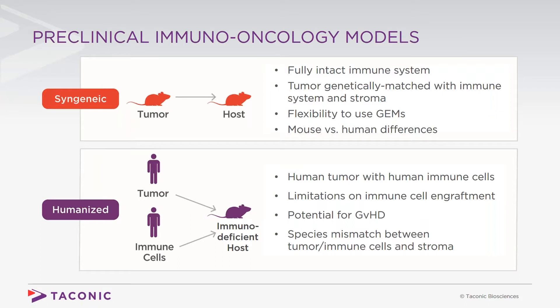However, there are several considerations for these models. Firstly, the extent to which the full complement of the human immune system can be engrafted is limited. There are several ways to address this, including next-generation NOG models that express transgenic human cytokines to support engraftment of additional hematopoietic lineages. Nevertheless, there is always a concern for graft versus host disease in these models, as human T cells and phagocytes can target host tissues.